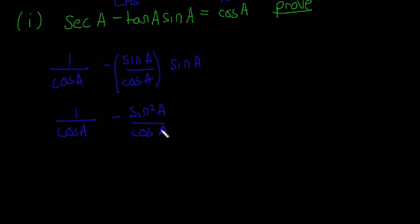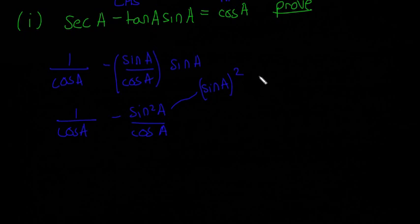If you haven't seen sine squared before, that just means sine(a) times sine(a). Sine squared of a is equal to sine(a) squared — they write it that way so you know the whole thing is squared and not just the angle. Sine of a squared means only the angle is squared, whereas sine squared of a means the whole thing is squared. To avoid that ambiguity, they write sine squared of a.